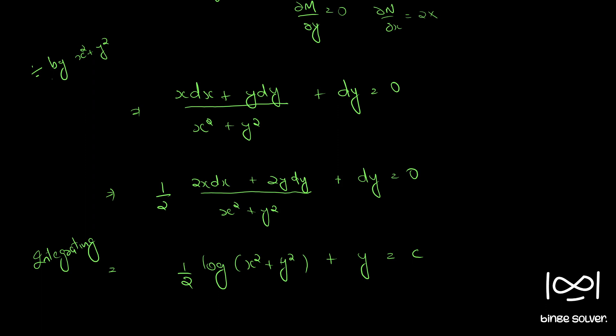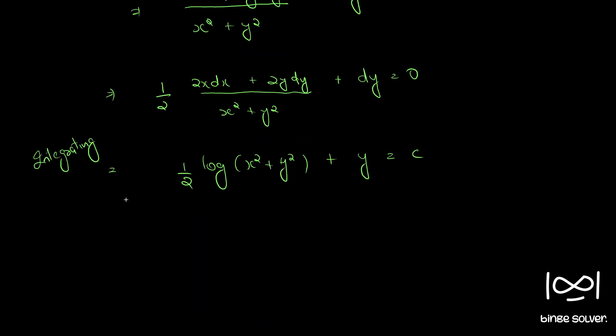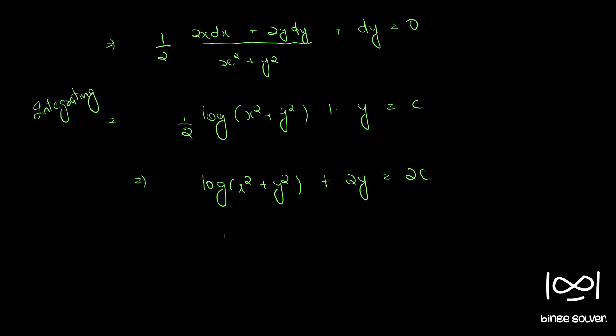Okay, the answer given, sorry for the delay, the answer given is a bit different. So, we can rearrange this: log (x square plus y square) plus 2y equal to 2c, or log (x square plus y square) equal to minus 2y plus 2c.